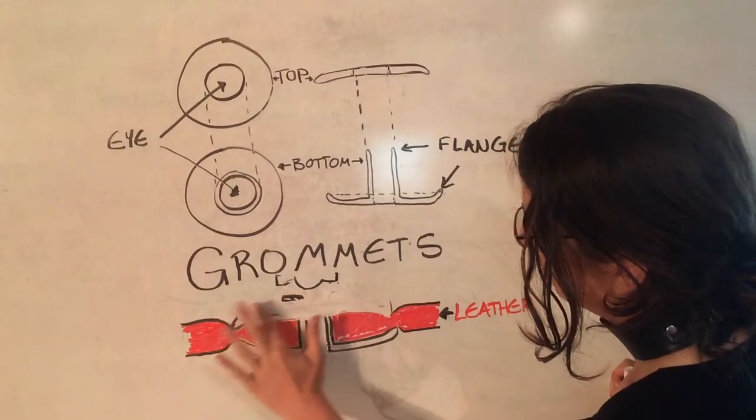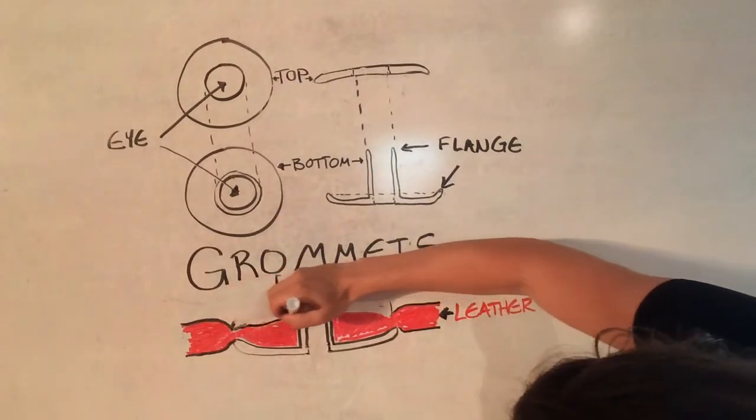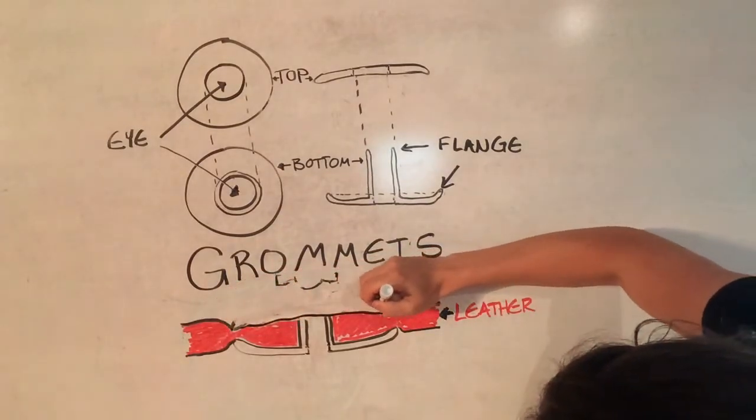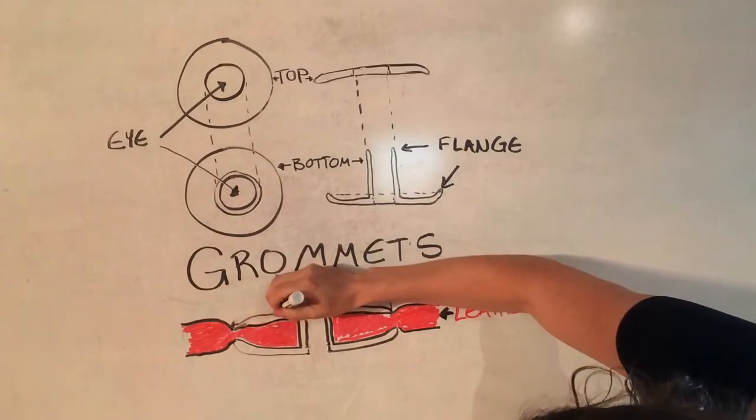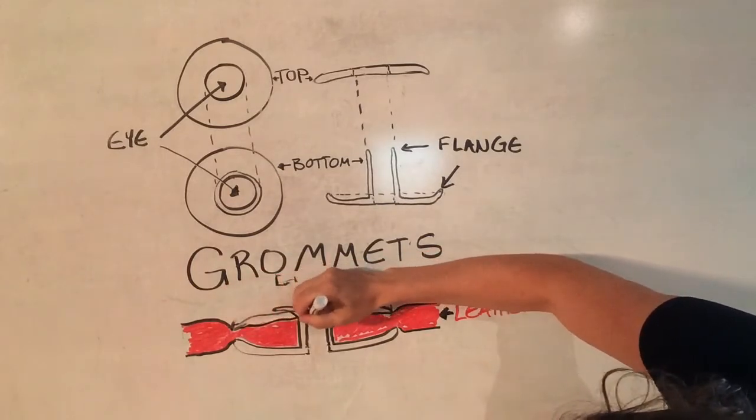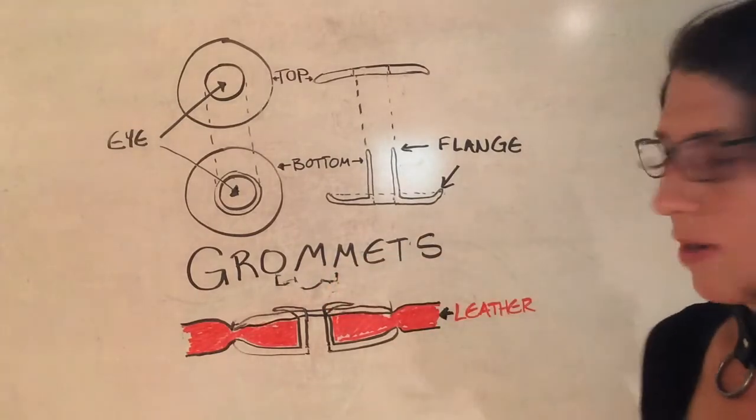And then our flange is going to pull the top half of that washer down even further to give us a tighter grip, right? And so this flange is now spread out very far relative to the punch shape of our part.